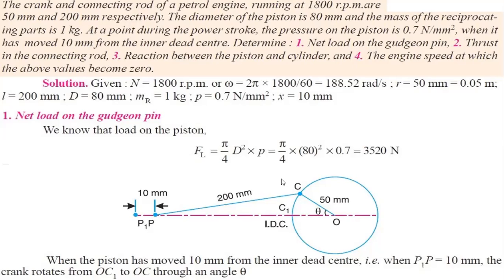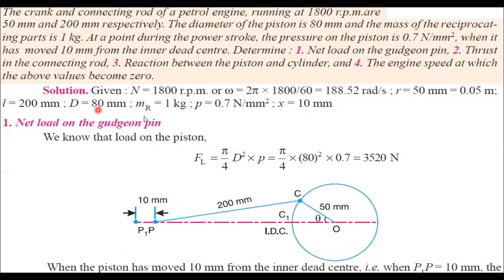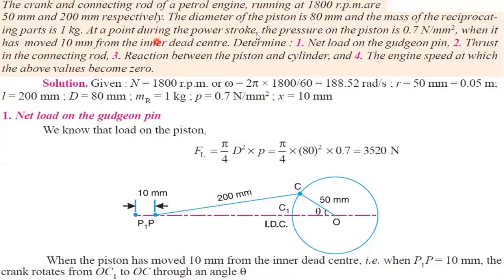The diameter of the piston is 80mm, so capital D is 80mm — convert into meters. The mass of the reciprocating part Mr is 1 kg. At a point during the power stroke, the pressure on the piston is 0.7 Newton per millimeter square, when the piston has moved 10mm from the inner dead center — so displacement x is 10mm.